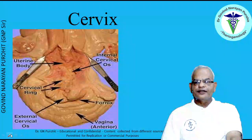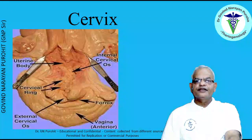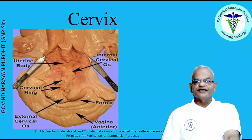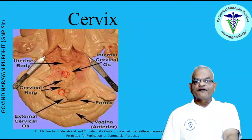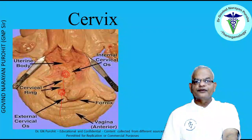The cervix has two openings: one towards the vagina known as the external cervical os, and then there is the internal os. When performing artificial insemination, the catheter must be passed through both openings to reach the uterus.